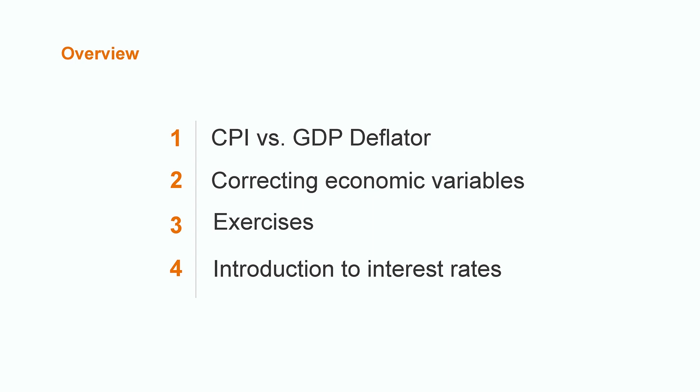The first step will be to establish the difference between CPI and GDP deflator as ways of adjusting economic variables. Then we're going to justify the importance of correcting economic variables such as inflation. Afterwards, we will put those concepts into practice by doing some small exercises. And finally, we'll make a short introduction to interest rates. This will allow us to establish comparisons over periods of time.